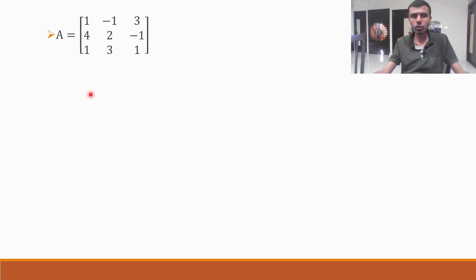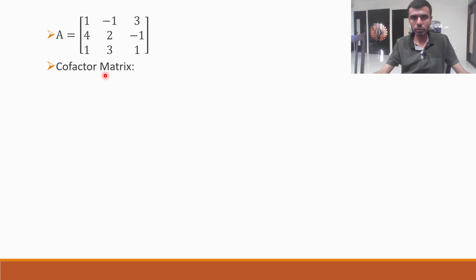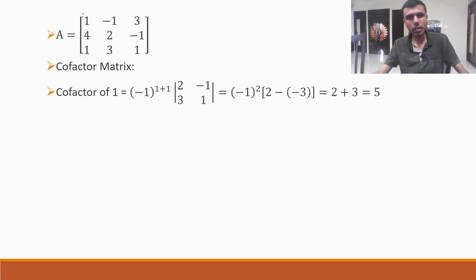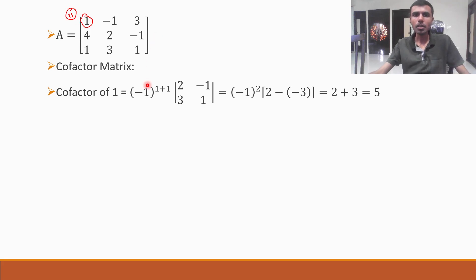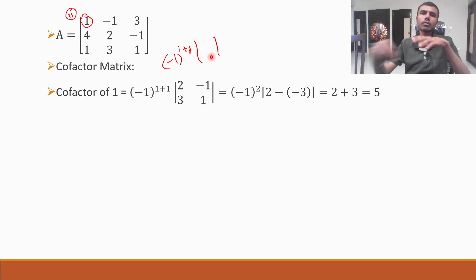Now, in matrix inversion method, we have to find out cofactors for the matrix A. The cofactor means: minus one to the power i plus j, into the determinant of the remaining elements after you strike off the row and column in which that element is located. For element 1 at position (1,1): minus one to the power 1 plus 1, into det of [2, -1; 3, 1].